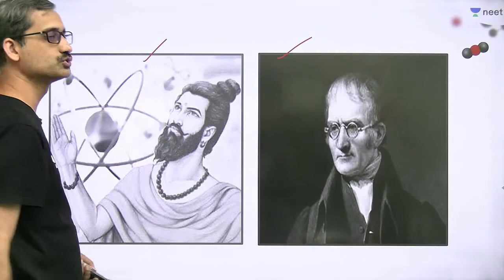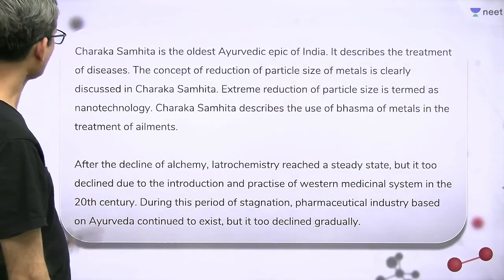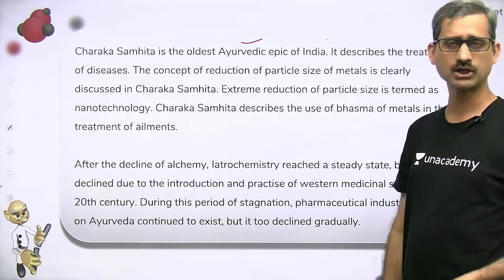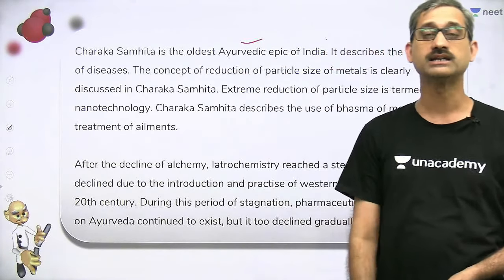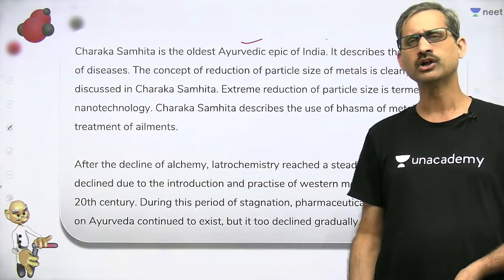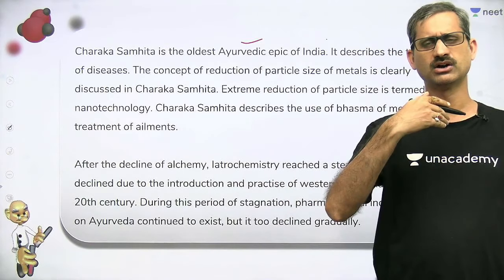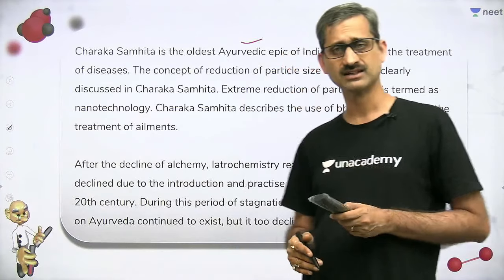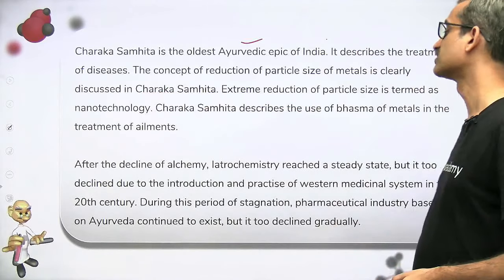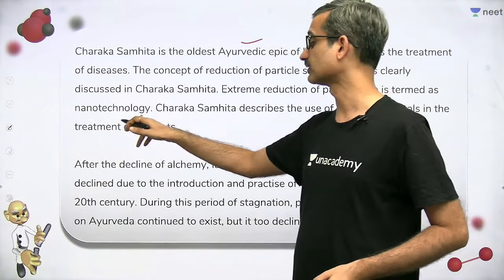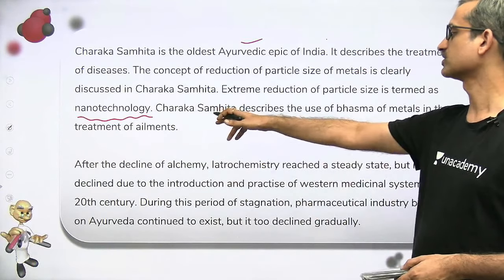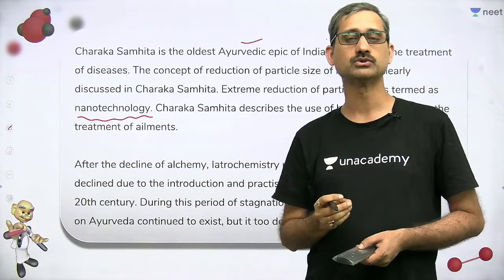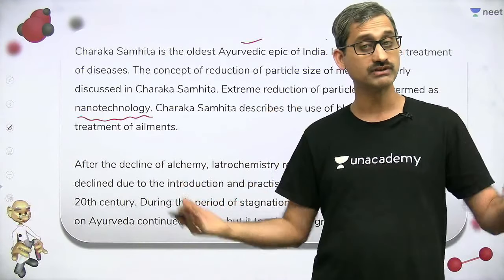Kanad stated there are a variety of atoms as different as the different classes of substances, and that Parmanus could form pairs, triplets, and other combinations held together by unseen forces — which, though he couldn't pinpoint, he suggested were causing interaction between them. He conceptualized this theory around 2500 years before John Dalton. The Charak Samhita, the oldest Ayurvedic epic of India, describes treatment of diseases. Ayurveda is an alternate medicine system to be treated with proper respect. It described the extreme reduction of particle sizes — what we now call nanotechnology — through the use of Bhasma, finely powdered particulate matter made from specific metals for treatment of illnesses.